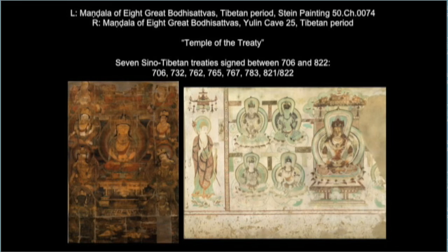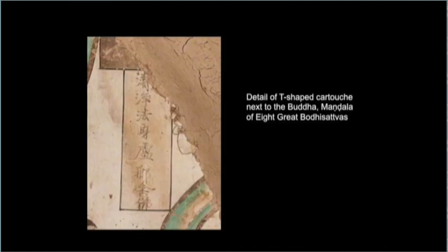A close-up detail of one cartouche to the left side of the Buddha shows only Chinese script, identifying the central deity as Dharmakaya Vairocana Buddha. In this cave it seems the Tibetan cartouches were never filled in for reasons we don't fully understand, and only the Chinese ones were filled in. Other caves at the Mogao site similarly have T-shaped cartouches for writing both Tibetan and Chinese inscriptions — Mogao Caves 365, 75, and 251 — showing this was not an entirely uncommon practice at Dunhuang.